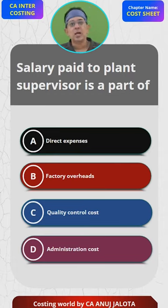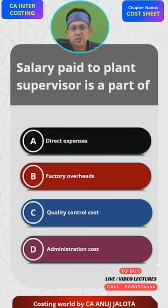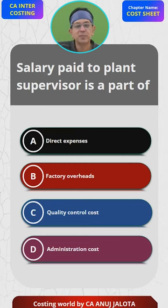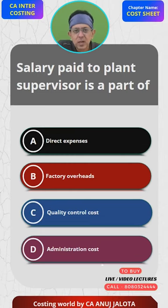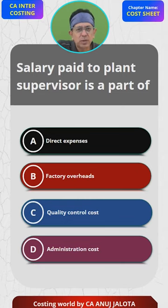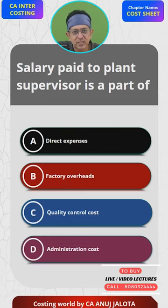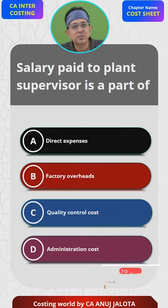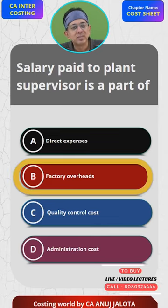Direct expenses cannot be the answer because direct expenses are expenses which are incurred especially for a job. Quality control — these are the expenses to ensure that the product meets the quality, so the supervisor is not for that. Administration — these are not office expenses. The plant supervisor will be managing plant and machinery plus supervising the workers, and workers and plant and machinery are in the factory. So the answer should be B, factory overheads. That's the correct answer.